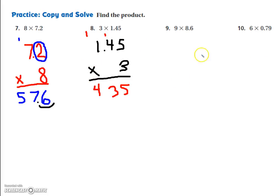Now I figure out where the decimal goes. I'm going to circle all the numbers after the decimal, the 4 and the 5. And I put my pencil at the very end, and I count two times because there's two numbers circled. 1, 2. 4.35 is my answer.